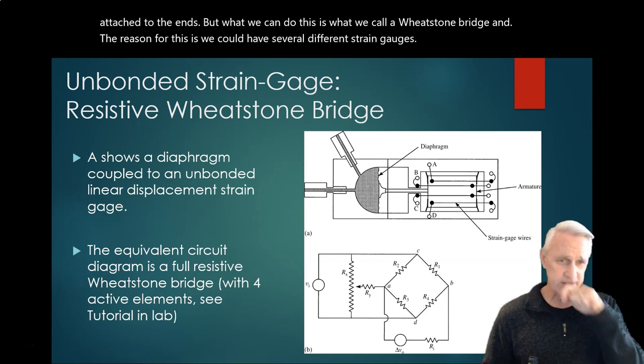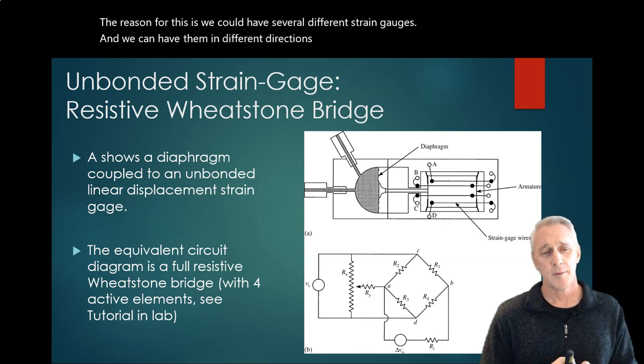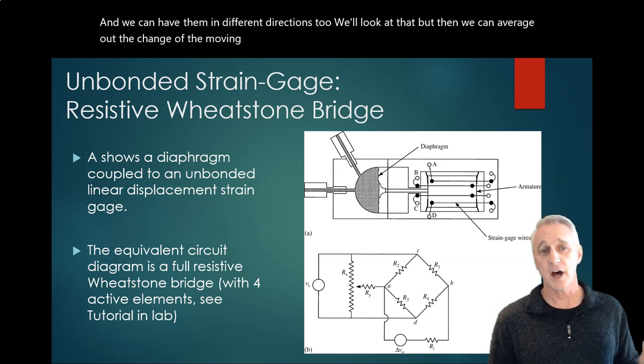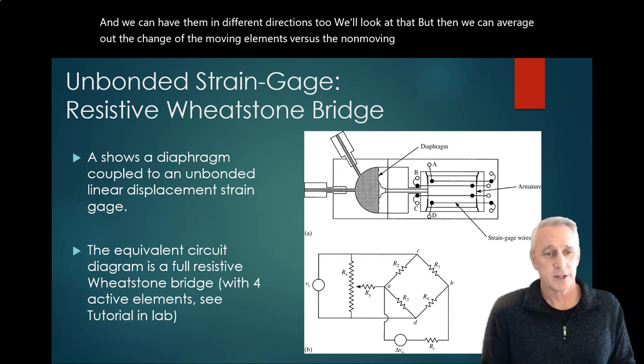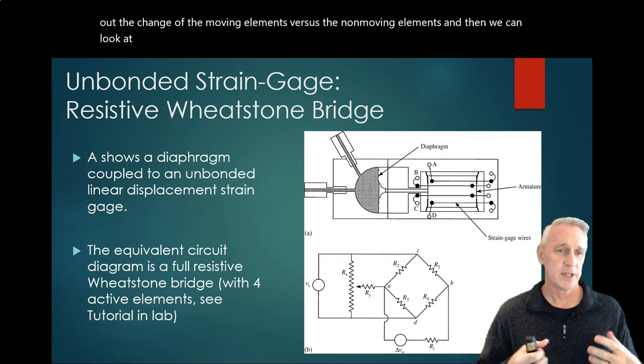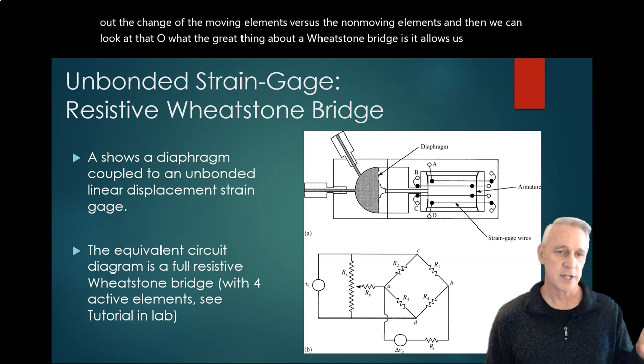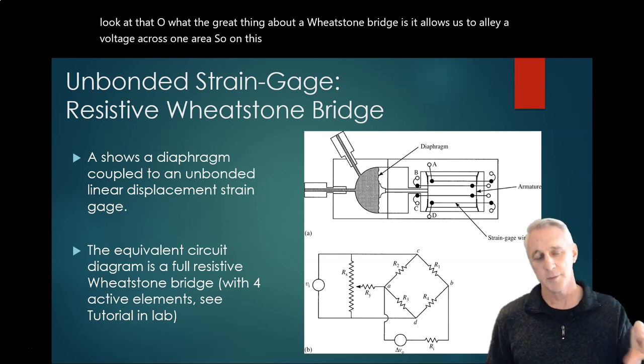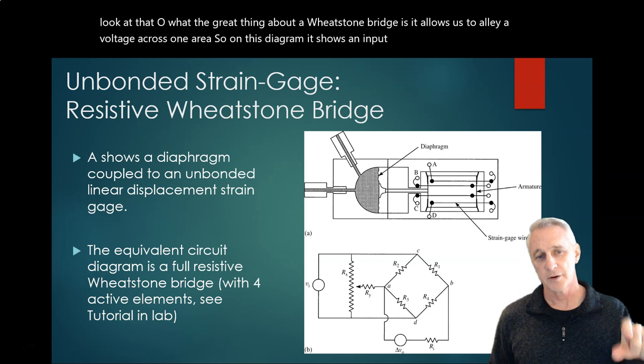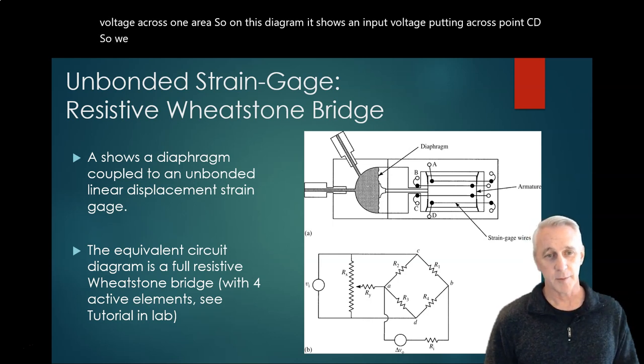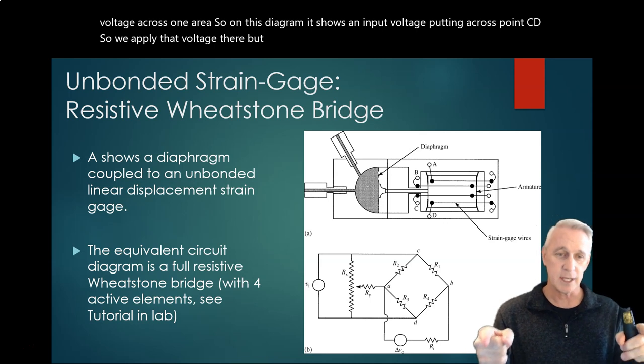And the reason for this is we can have several different strain gauges in different directions, and then we can average out the change of the moving elements versus the non-moving elements. So what's great about a Wheatstone bridge is it allows us to apply a voltage across one area. So on this diagram, it shows an input voltage across points C and D. We apply that voltage there, but we measure across points A and B.